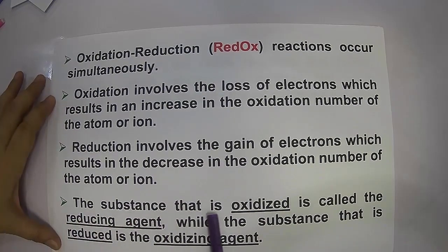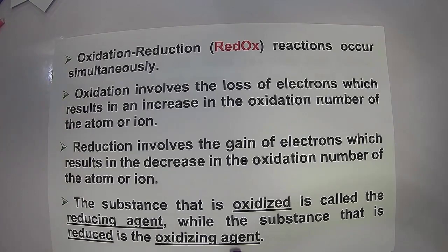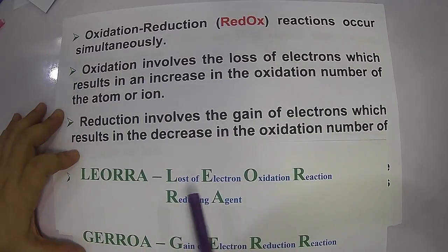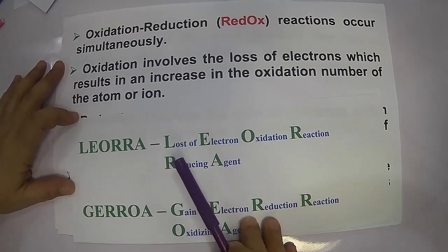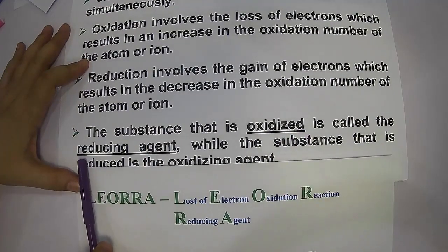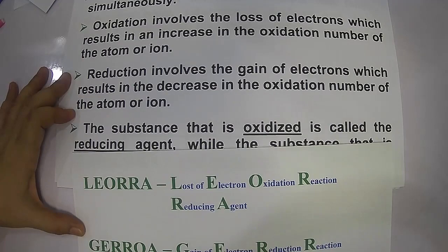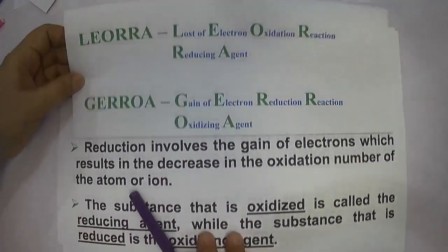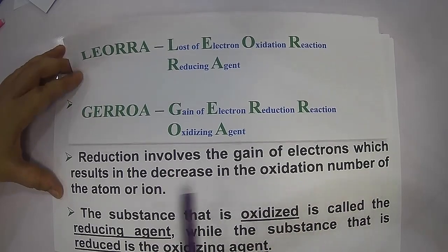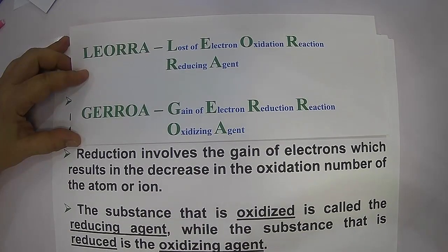The substance that is oxidized is called the reducing agent, while the substance that is reduced is the oxidizing agent. We can summarize with an acronym: loss of electron undergoes oxidation reaction — the one that is oxidized is called the reducing agent. The one that gains electron undergoes reduction reaction, and the substance that undergoes reduction is called the oxidizing agent.